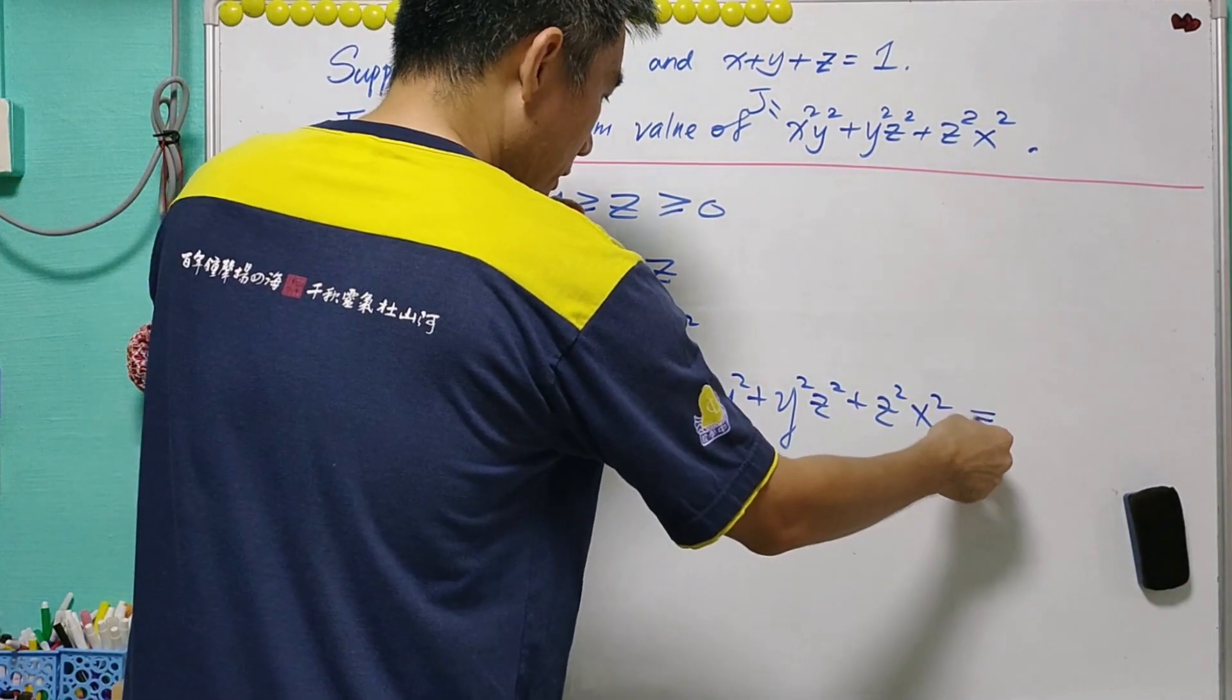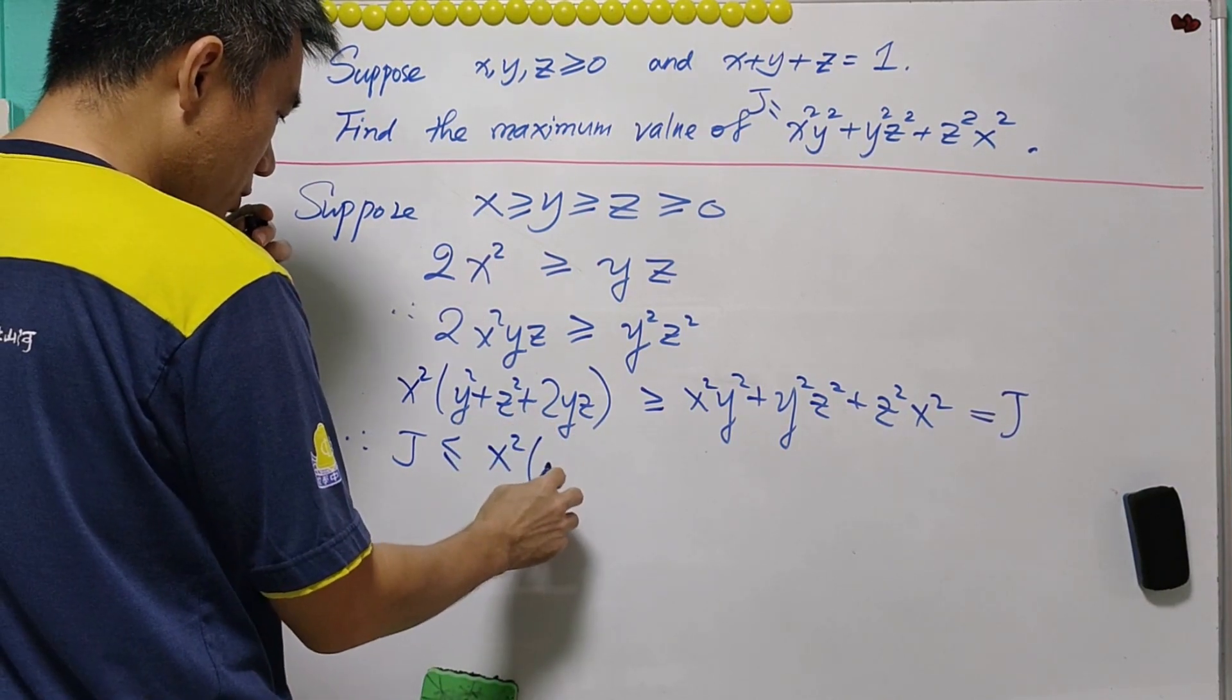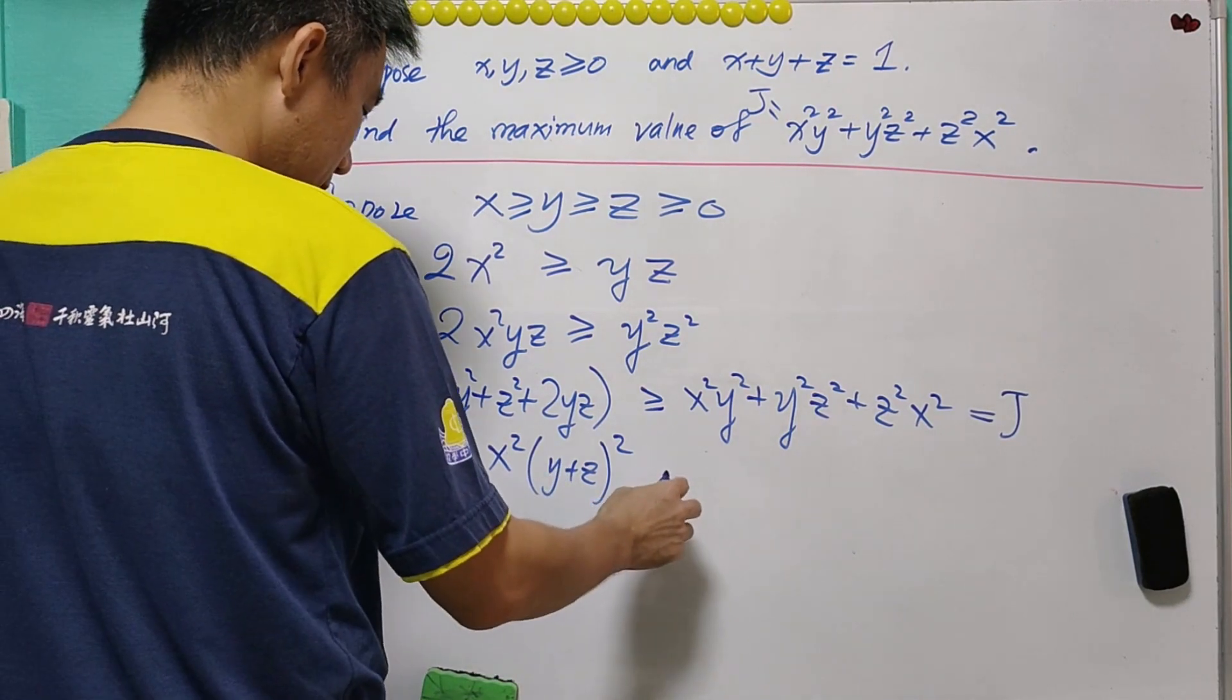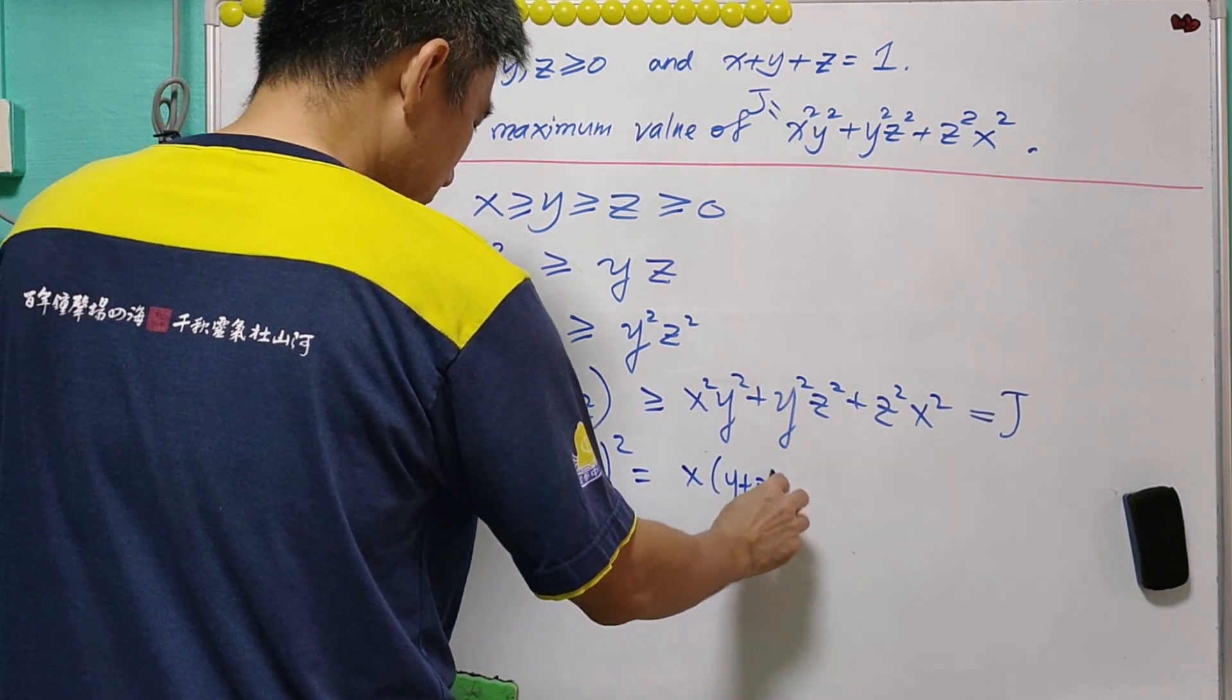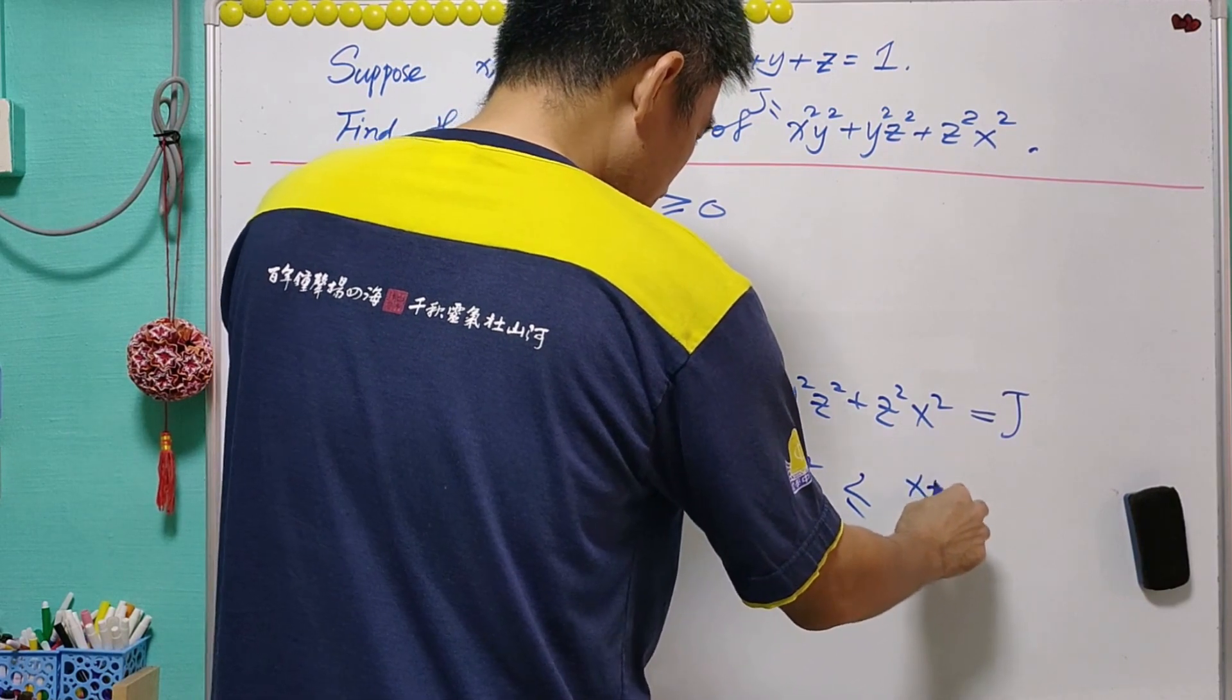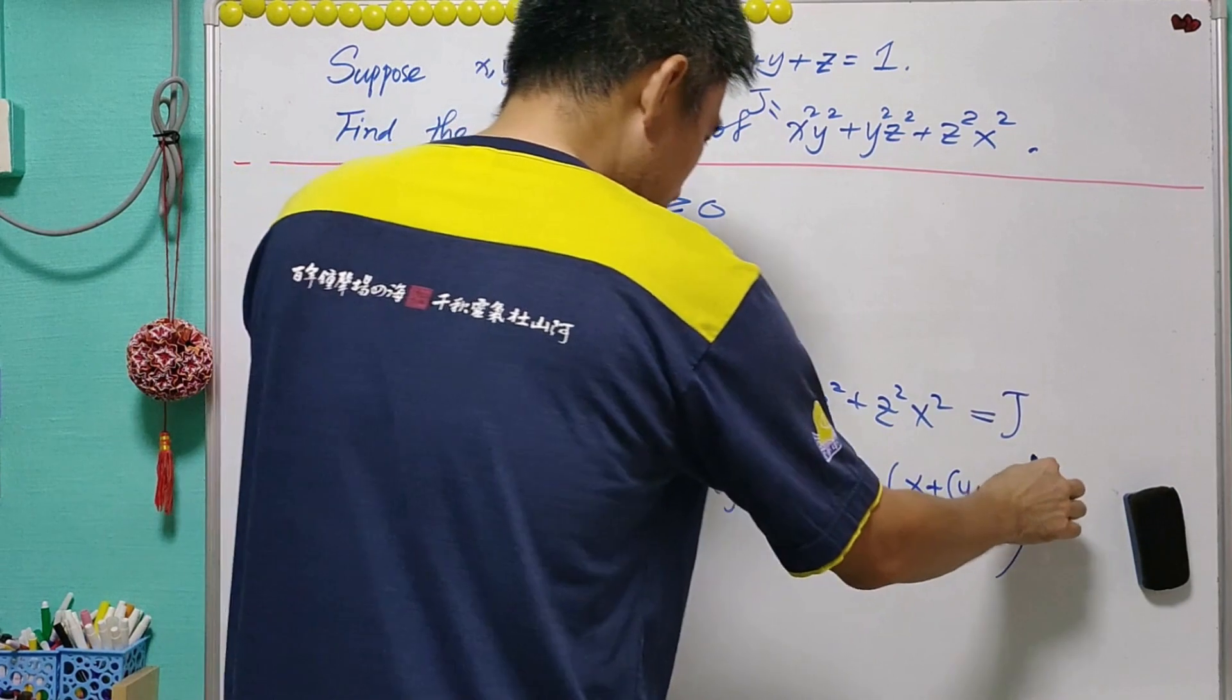And this is what we let it as j. Now, it means that j will be less than or equal to x squared times this. And this itself is actually equal to y plus z squared. Then, this itself is x, y plus z, the whole thing squared. Using AM-GM inequality, x, y plus z will be less than or equal to x plus y plus z over 2. Then, the whole thing power 2. But because there is a 2 here, that is a power 4.